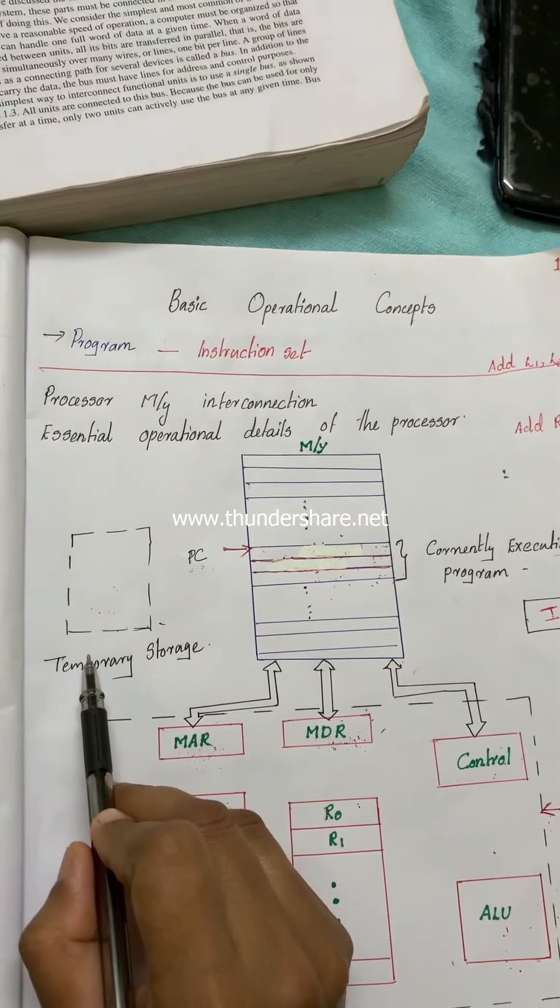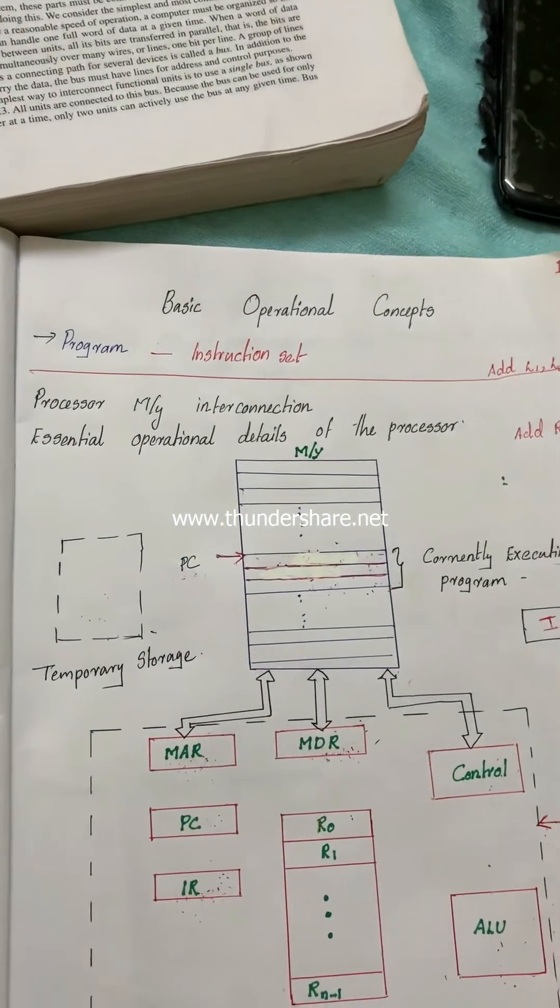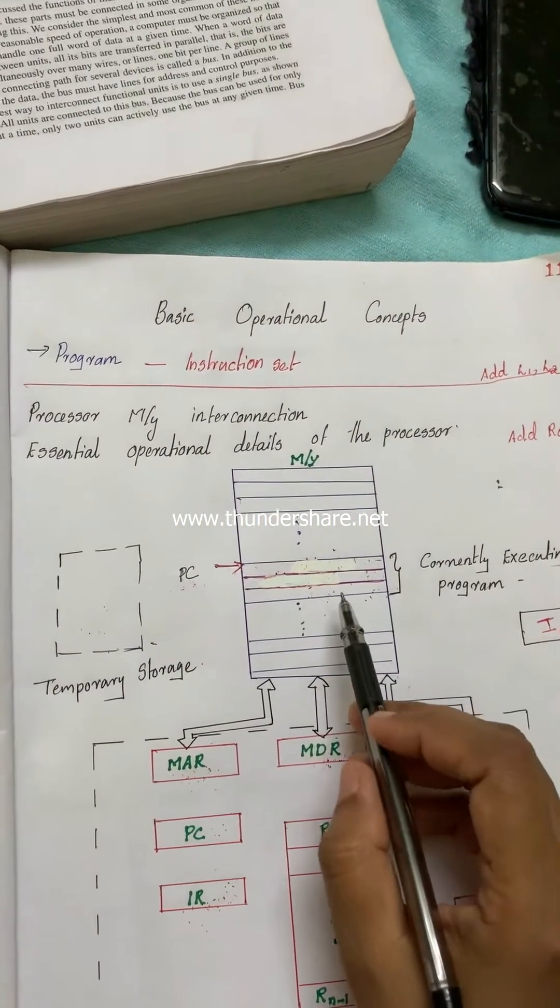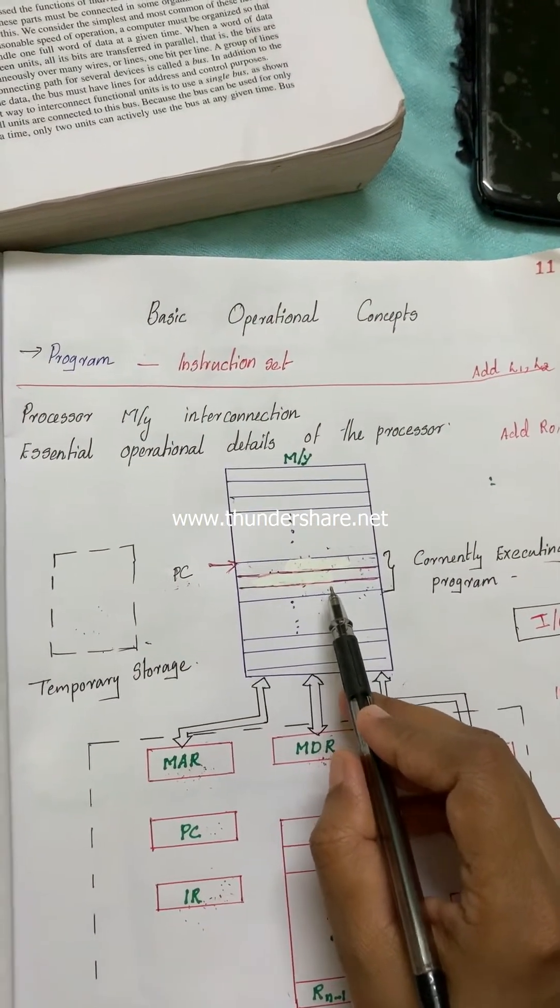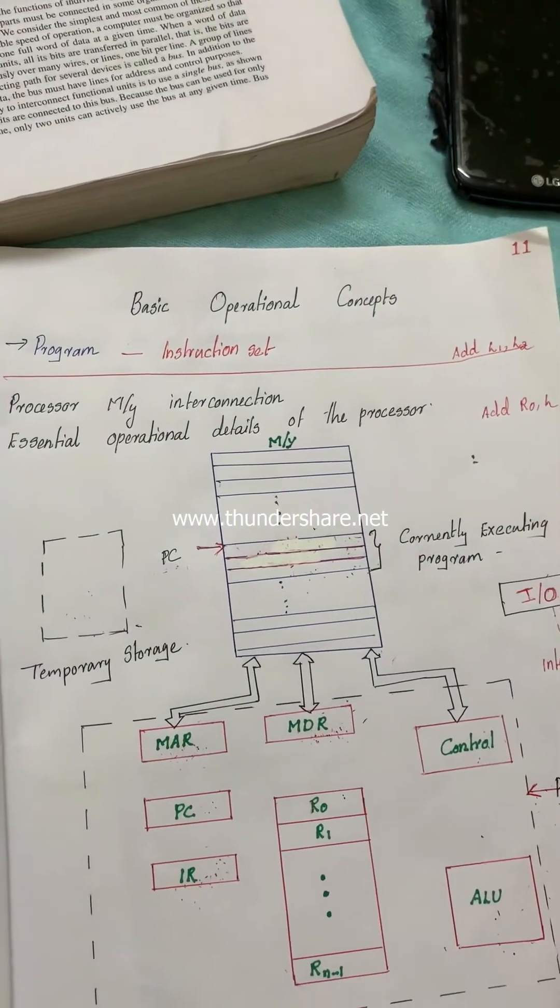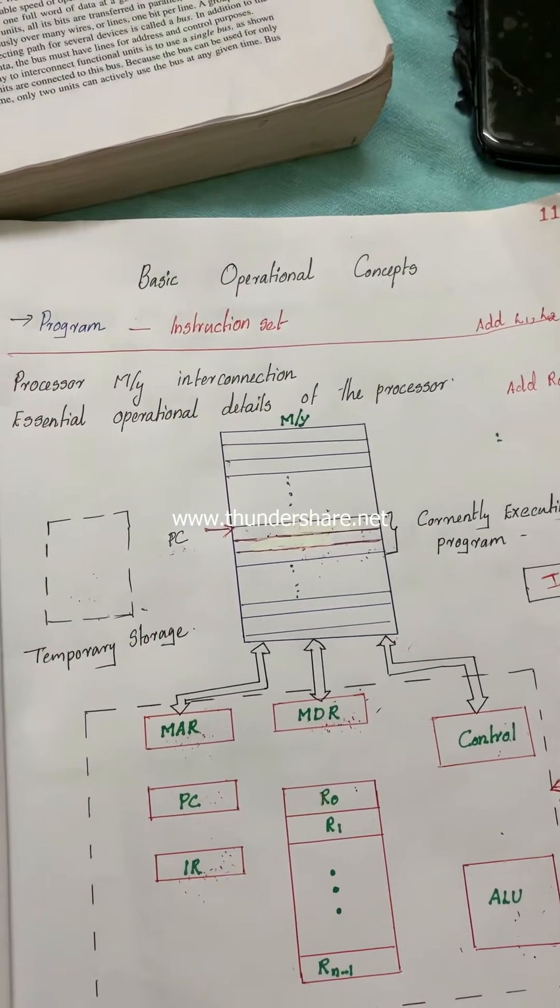the processor moves back to the temporary storage and collects the stored status information back, and starts the execution of the interrupted program from where it stopped. That is the important point.